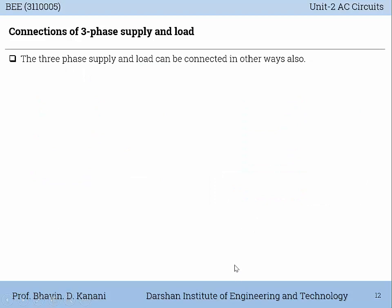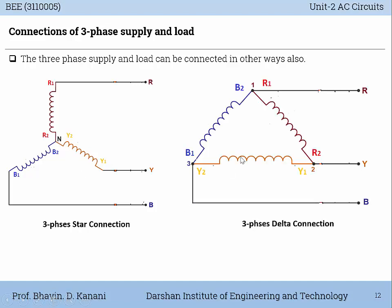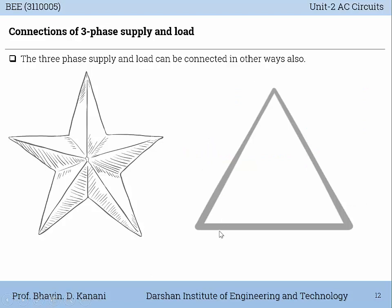The three-phase supply and load can be connected in other ways as well. The connections are technically the same as the previous diagram but with a change in visual representation. The star connection configuration looks like a star shape with a common point, whereas the delta connection looks like a triangle — this is the geometrical concept.